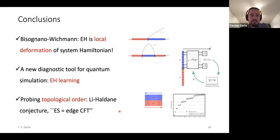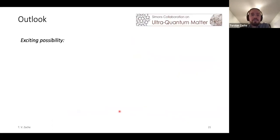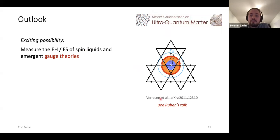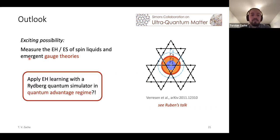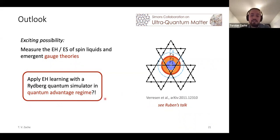In conclusion, I hope I've convinced you that the Bisognano-Wichmann theorem provides an astonishing result — that the entanglement Hamiltonian is a local deformation of the system. This is something we can use as a new tool for quantum simulation, using protocols such as the one we developed to learn the entanglement Hamiltonian, thereby providing a new way to measure entanglement properties quantitatively. A really exciting application is in the context of topological order. As an outlook, this fits perfectly into the collaboration on ultra quantum matter — for instance, think about the Rydberg quantum simulator that potentially realizes a spin liquid. It would be really nice to apply entanglement Hamiltonian learning protocols in the context of spin liquids or emergent gauge theories, perhaps in a regime beyond what classical computers can do. Thank you for your attention.